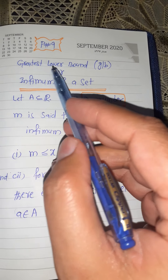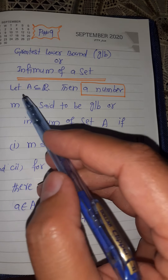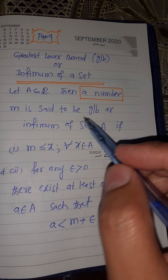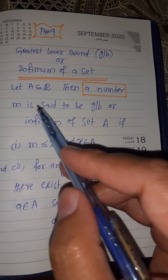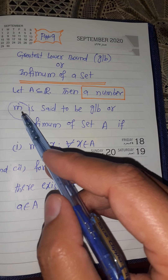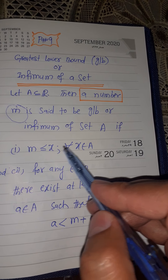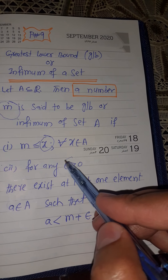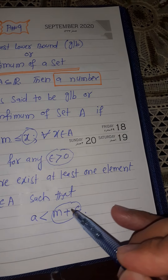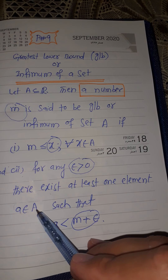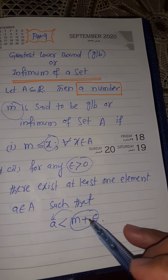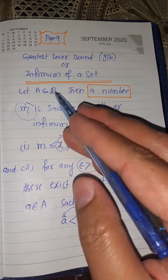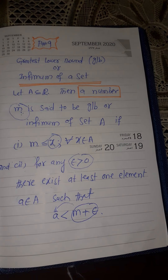This is the definition of the greatest lower bound or infimum of a set. Let A be a subset of ℝ. Then a number m is said to be the GLB (greatest lower bound) or infimum of set A if it satisfies two properties: number one, m ≤ x for all x ∈ A, meaning all elements of the set are greater than or equal to m; and number two, for any positive number epsilon, there exists at least one element in the set such that x < m + ε. If a number satisfies these two conditions, it is the infimum of that set.